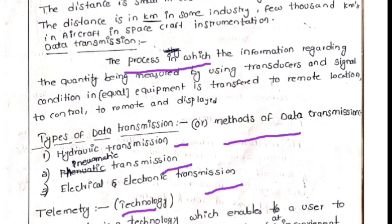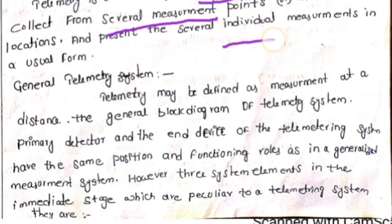Telemetry is the technology used to transmit data. The word telemetry comes from 'tele' meaning long distances and 'metering' the equipment. Telemetry is a technology which enables the user to collect from several measurement points or inconvenient locations. For example, if the temperature is too high, we can't go and measure there — we use sensors, and the data comes through a communication channel.